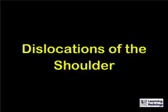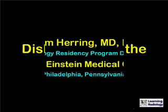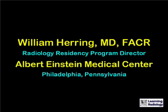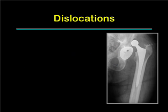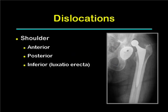This is video podcast 19 from learningradiology.com. Dislocations of the shoulder. I'm William Herring from Albert Einstein Medical Center in Philadelphia. This podcast is going to focus on dislocations of the shoulder: anterior, posterior, and inferior dislocations.